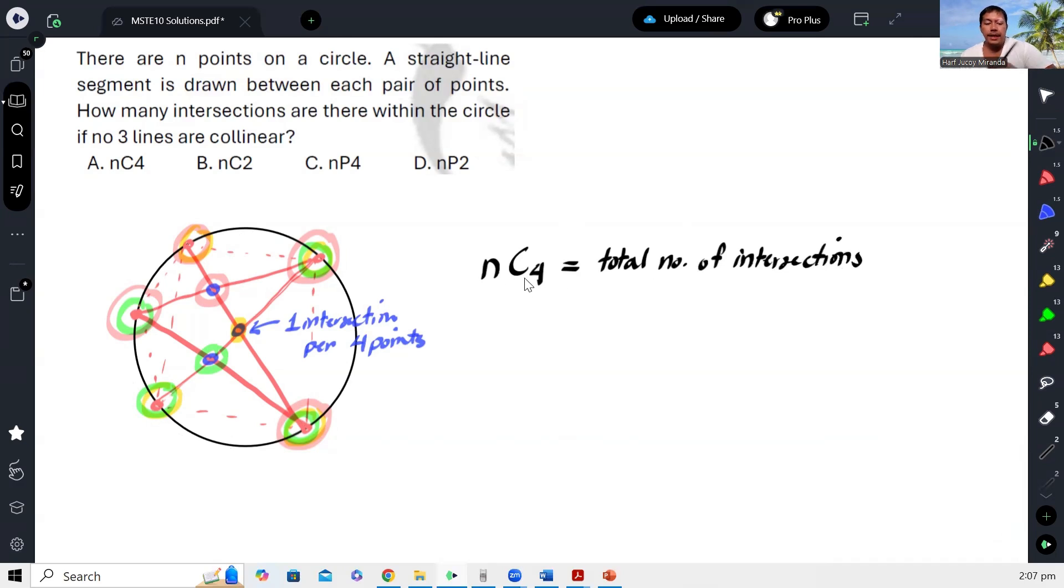Okay, so bakit combination? Kasi it doesn't matter kung ano yung arrangement or order nila. Basta meron kang apat na points, so ito yun representing this, no? So basta meron kang apat na points, no, puha ka lang ng apat na points dun sa n na points sa circle, isang intersection yun, okay? So ibig sabihin yung lahat ng tiga-apat na combination nung n points on the circle will produce that total number of intersections.